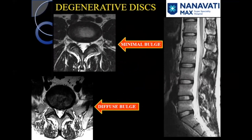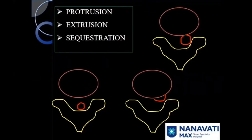We typically talk about posterior bulge because it is relevant in patients presenting with backache. As the discs start getting degenerated, they start bulging beyond the upper and lower vertebral bodies. When it covers more than 25% of circumference, it is called diffuse posterior bulge. When it is focal, it is called herniation, and that is broadly divided into protrusion, extrusion, and sequestration.